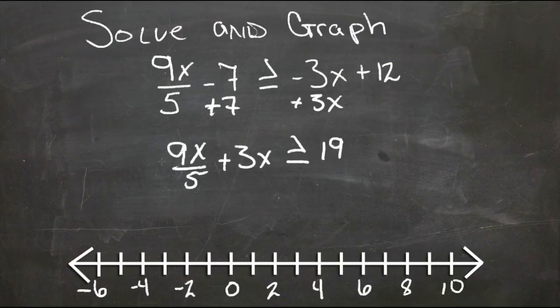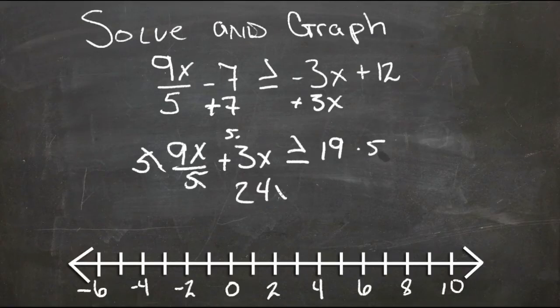Then we need to get rid of this 5, so we'll multiply both sides by 5. That will give us 9x plus 15x, or 24x is greater than or equal to 95.